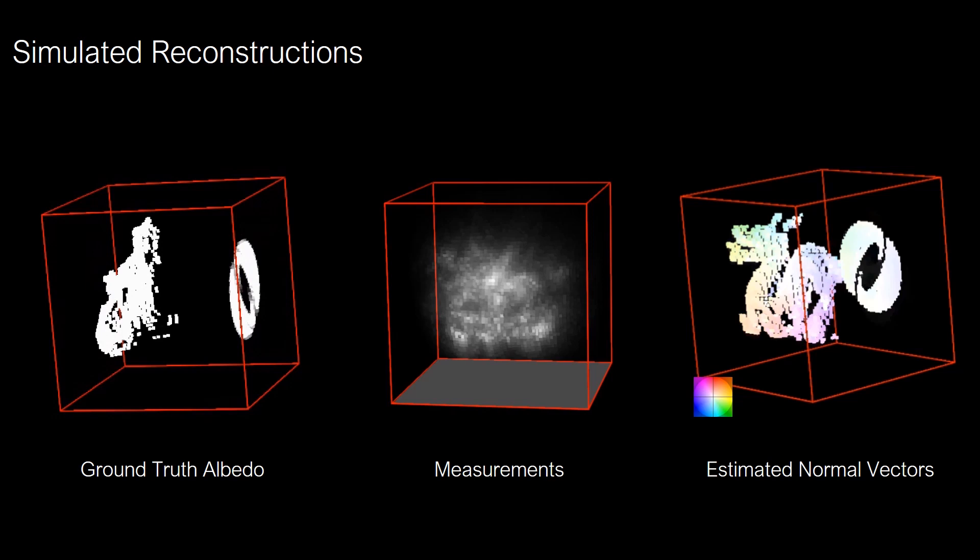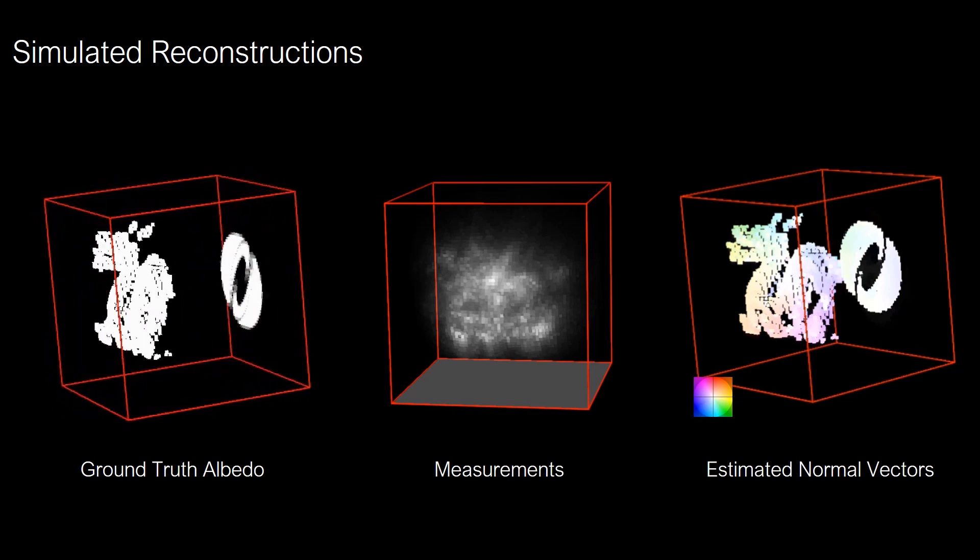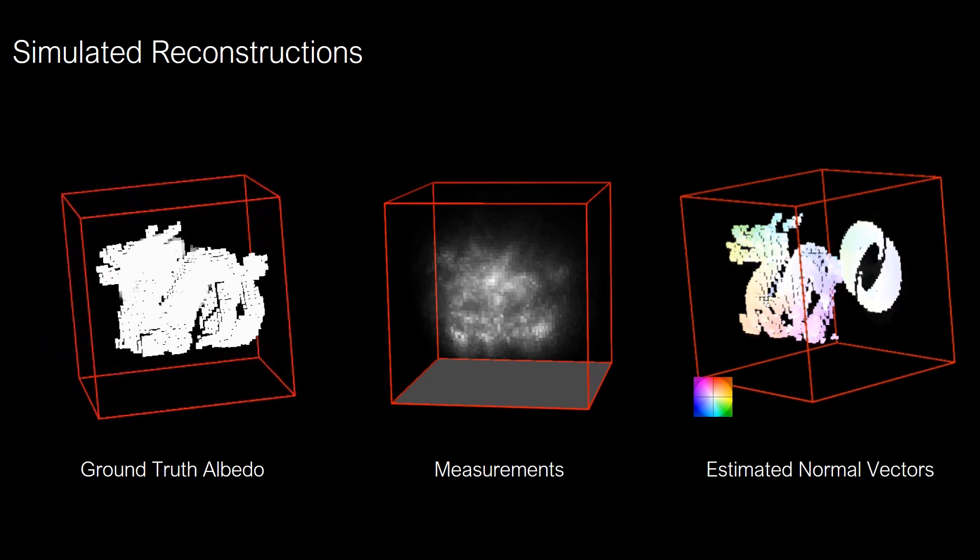Here you see simulated ground truth albedo, corresponding time-resolved measurements, and the normals estimated by the proposed method.